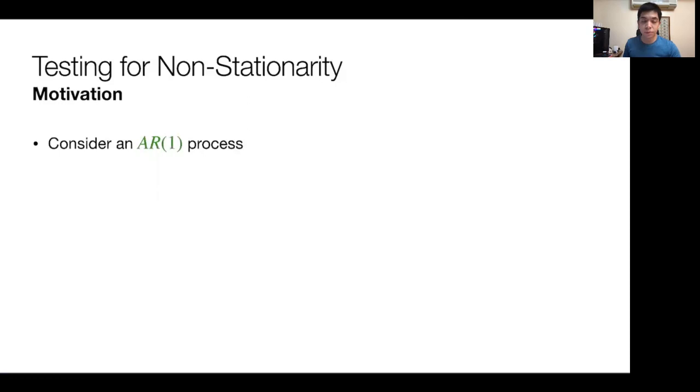So what exactly is a unit root? To get a better understanding, consider this simple AR1 process: YT equals phi1 times YT minus 1 plus UT. This is clearly an AR1 process with no intercept, and what would determine whether it's stationary or non-stationary would be what phi is.